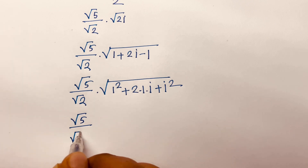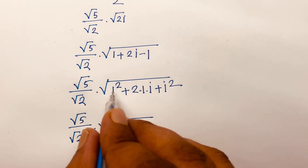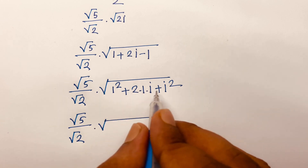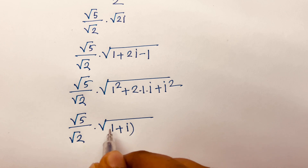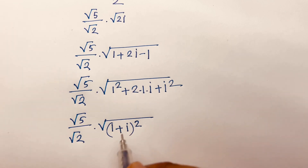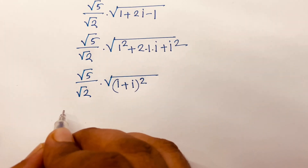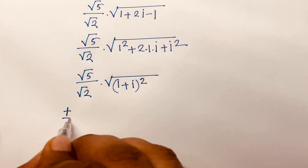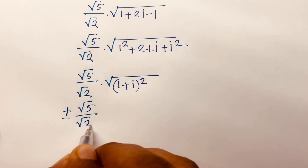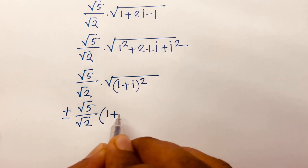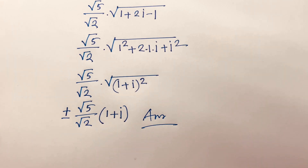Recognizing a² + 2ab + b² = (a+b)², where a=1 and b=i, this is a perfect square. The square root cancels, so we find that the square root of 5i equals plus or minus square root of 5 over square root 2 times (1 + i). This is our final answer for Method 1.